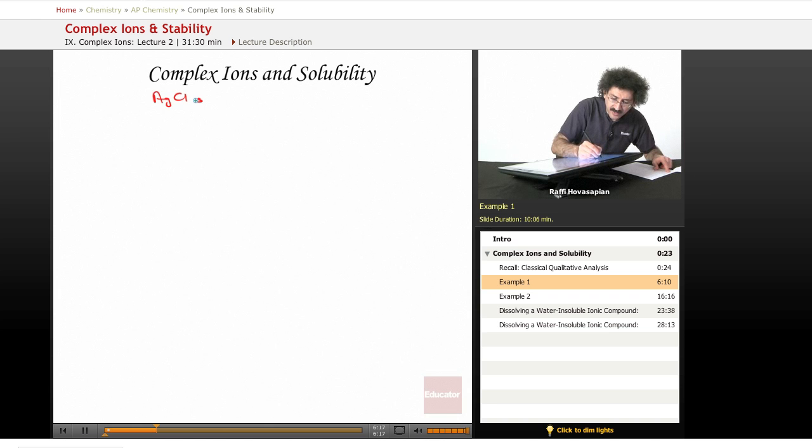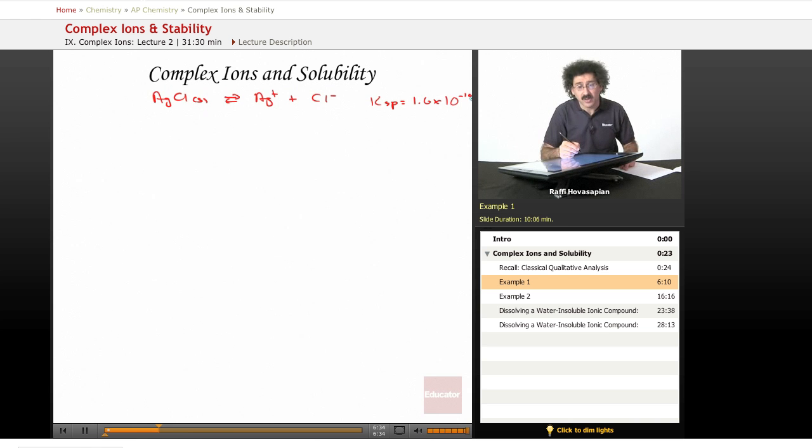AgCl solid is in equilibrium with Ag+ plus Cl-. If you remember, well you don't have to remember, the Ksp for this is 1.6 times 10 to the negative 10, so clearly not very soluble at all.